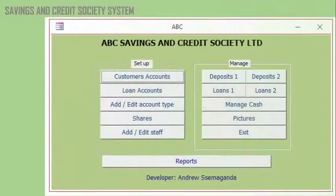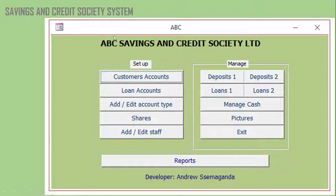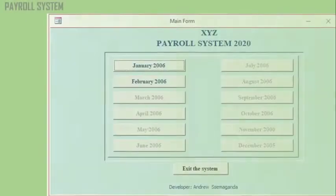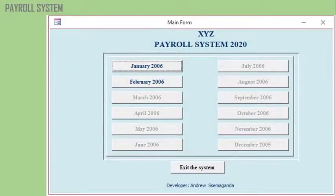The next template is for a savings and credit society, where members come together to save money. You can track how much savings a member has made in a year and manage lending from members' savings — a very good template for that kind of arrangement. Moving on, there is also the payroll system template, which you can use to manage your payroll and continue developing to suit your needs.